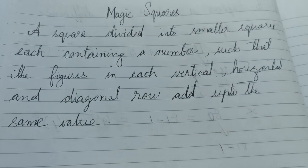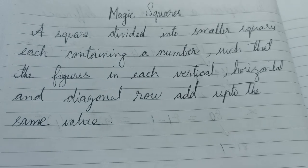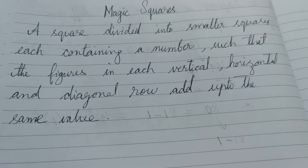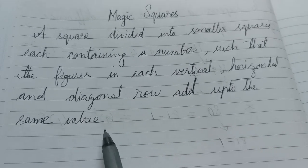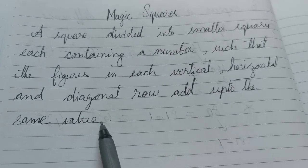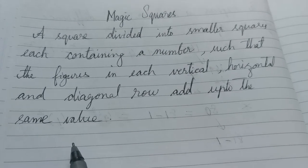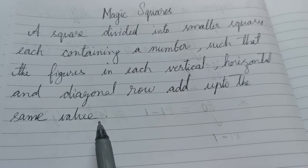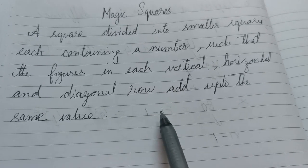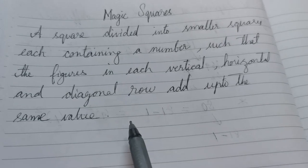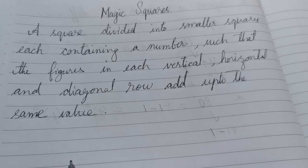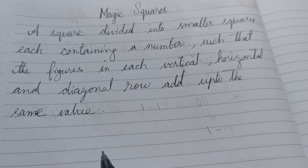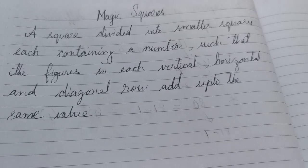Hello students. In this video we will learn about magic squares. It is a very interesting topic. A magic square is a square divided into smaller squares, each containing a number, such that the figures in each vertical, horizontal and diagonal row add up to the same value.